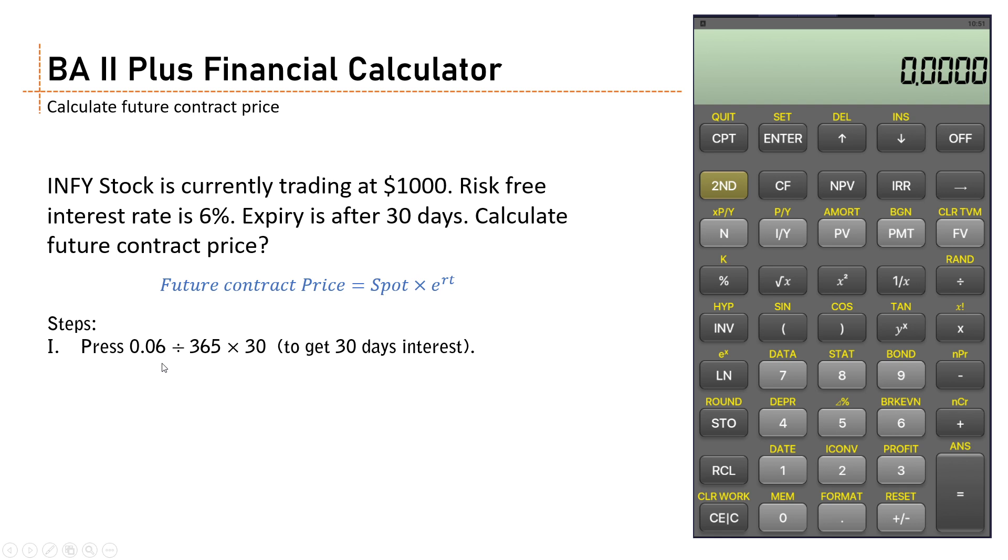So we enter 0.06, then divide this number by 365, and then multiply the same number by 30.